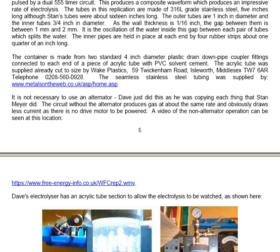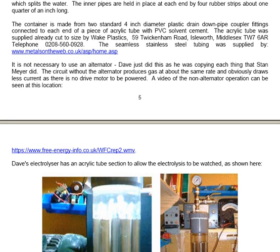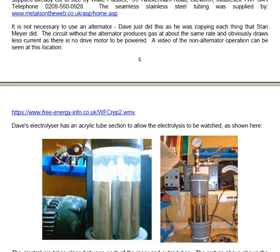The acrylic tube was supplied ready-cut to size by Wake Plastics, 59 Twickenham Road, Isleworth, Middlesex, TW7 6AR. The seamless stainless steel tubing was supplied by metalsontheweb.co.uk. It's not necessary to use an alternator. Dave just did that because he was copying each thing that Stan Meyer did. The circuit without the alternator produces gas at about the same rate and obviously draws less current as there's no drive motor to be powered.